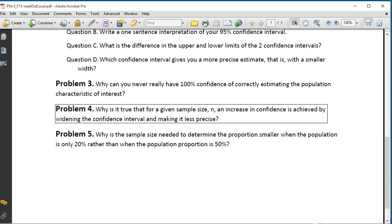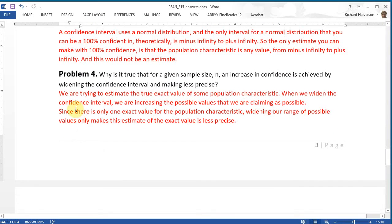Well, let's see. We saw this with problem number 2 in this problem set. We are trying to estimate a true exact value of some population characteristic, and when we widen the confidence interval, we are increasing the possible values that we are claiming as possible.